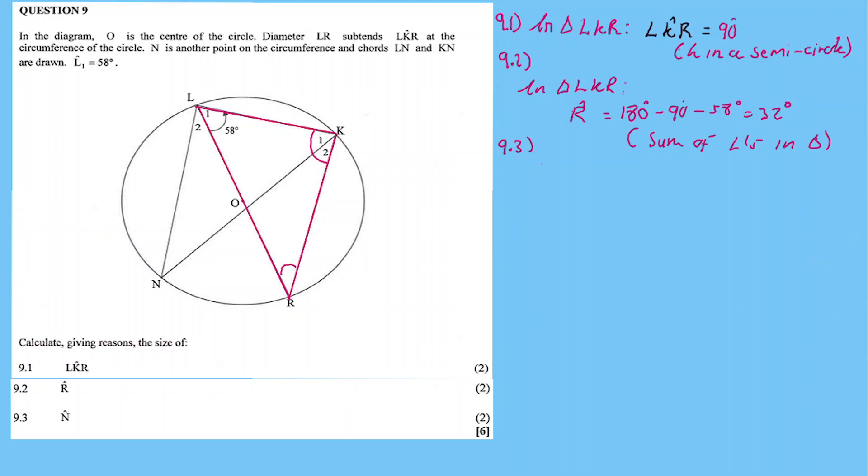Therefore, N and R are both equal because they are angles in the same segment. The reason N and R are equal is because they are angles in the same segment. Therefore, angle N equals 32 degrees.